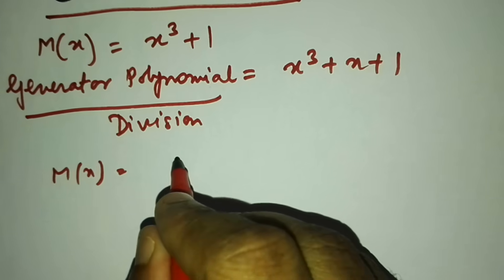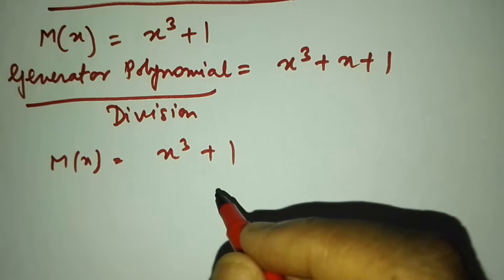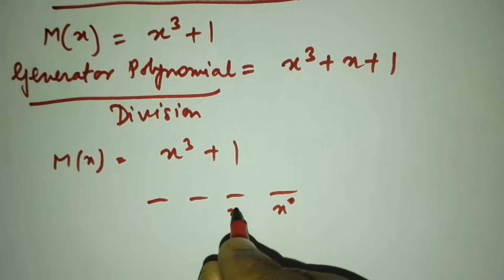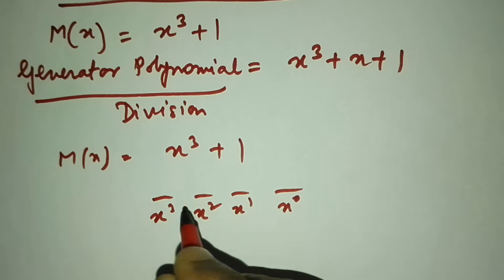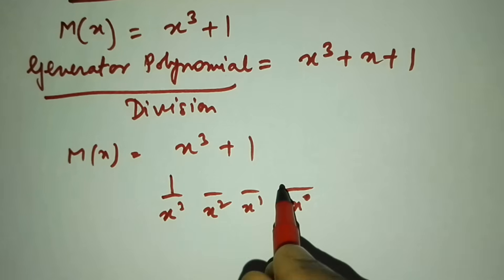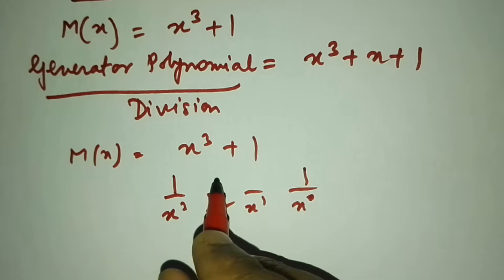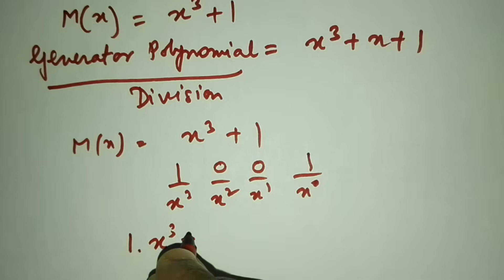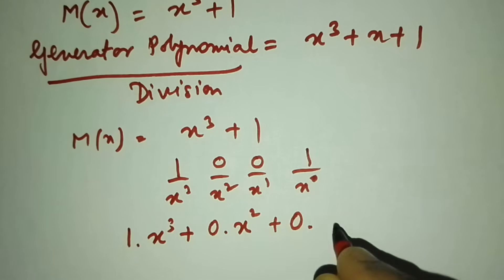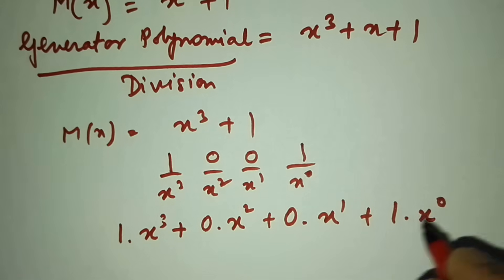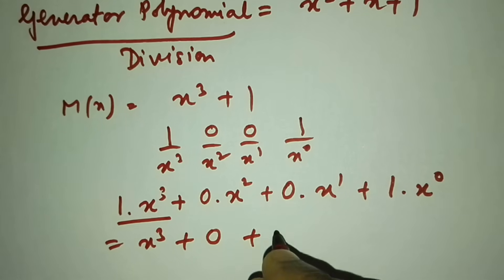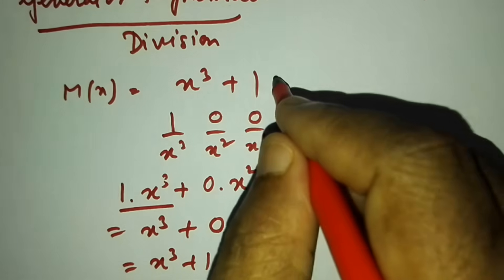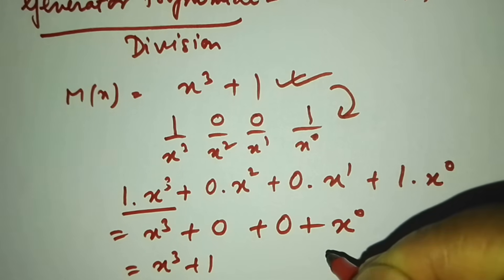Now I will show you how this message m(x) = x³ + 1 can be converted into binary values. You put 4 dashes and assign x⁰, x¹, x², x³. Since we have x³ this bit is 1, and x⁰ this bit is 1, and the rest are 0. So the binary is: 1·x³ + 0·x² + 0·x¹ + 1·x⁰, which equals x³ + x⁰ = 1.